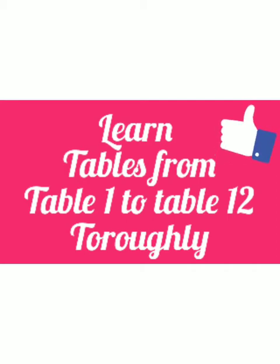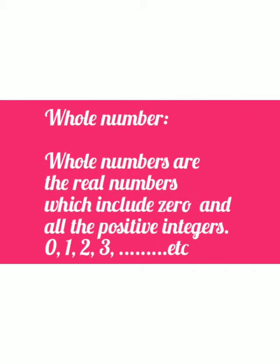Before starting multiplication, you should know what a whole number is. Whole numbers are real numbers which include 0 and all the positive integers. Integers means 1, 2, 3, 4, and so on. So whole numbers start from 0, 1, 2, 3, up to infinity. Infinity means the numbers have no end.